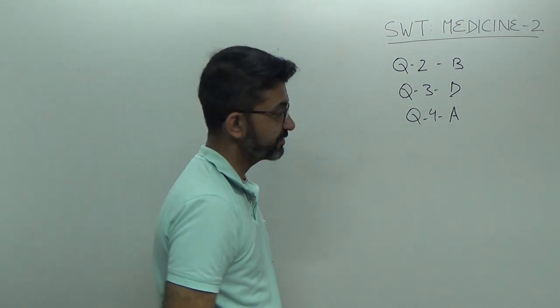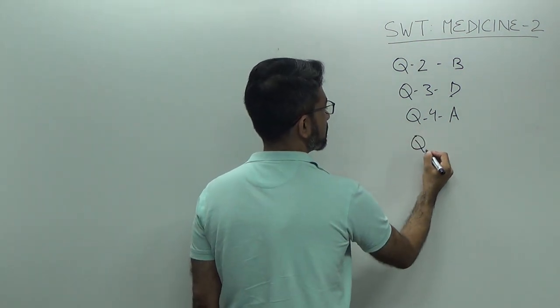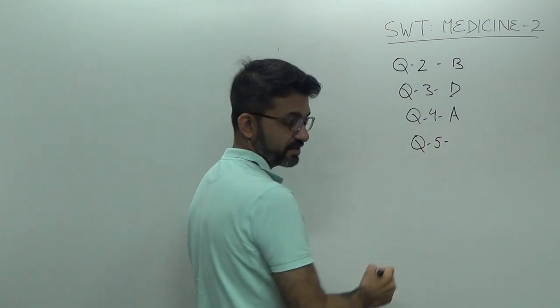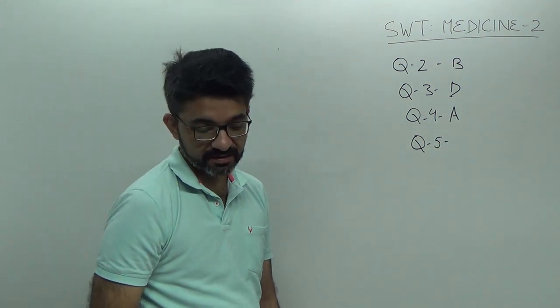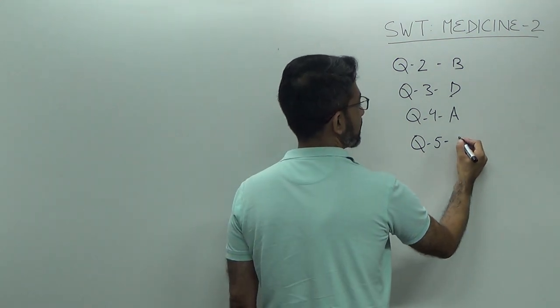Thrifty genes, question number 5, thrifty genes are associated with which of the following diabetes? It is type 2, answer is B.